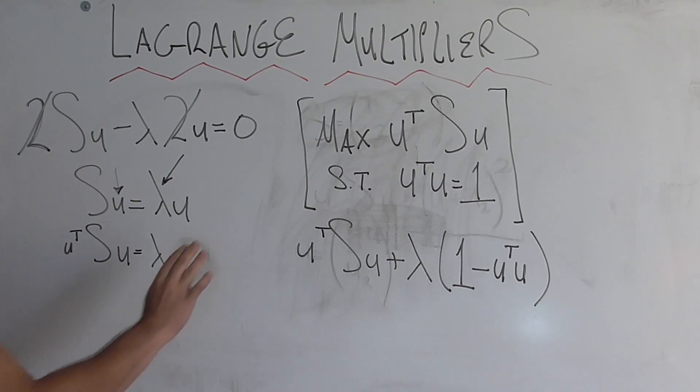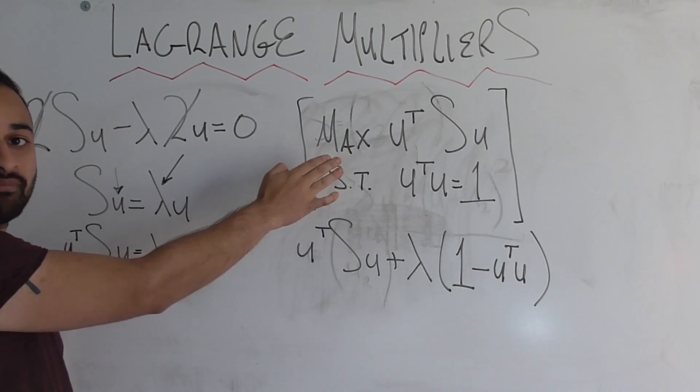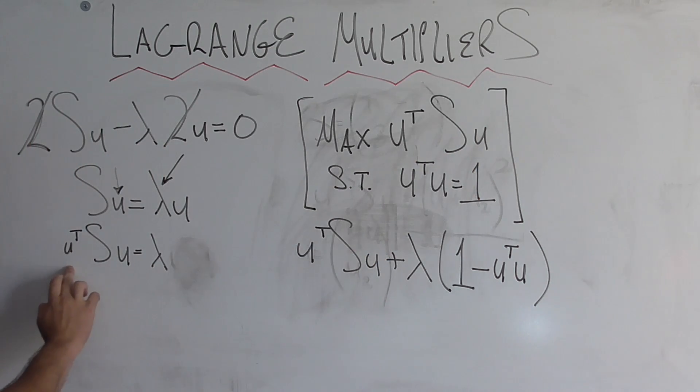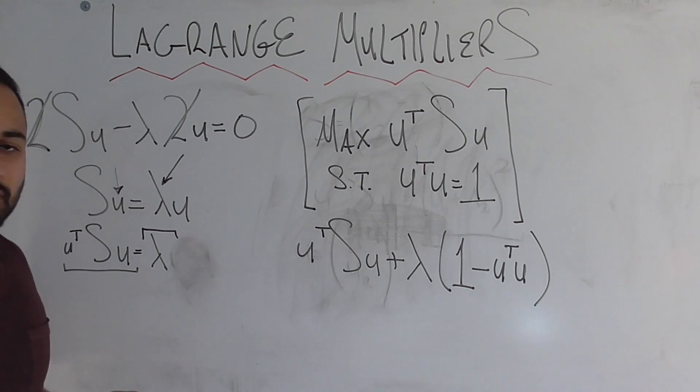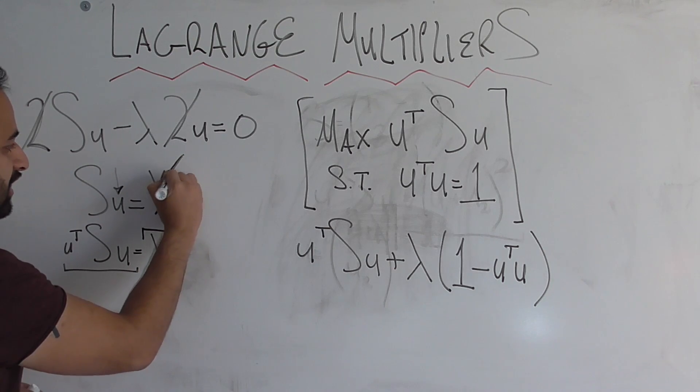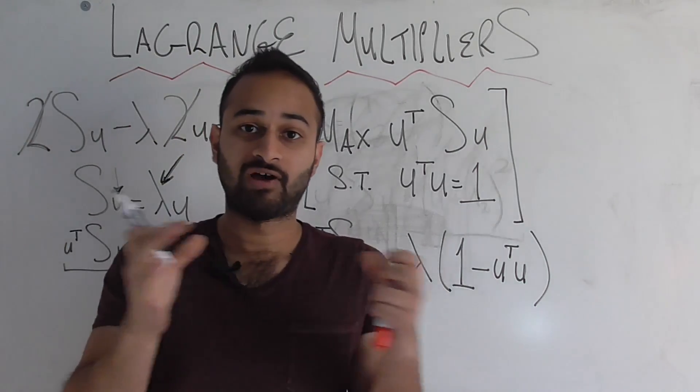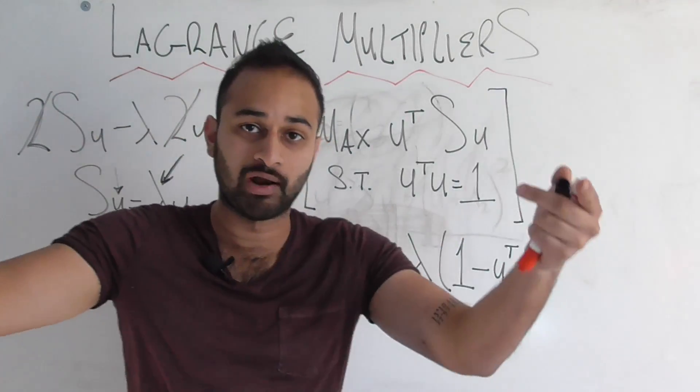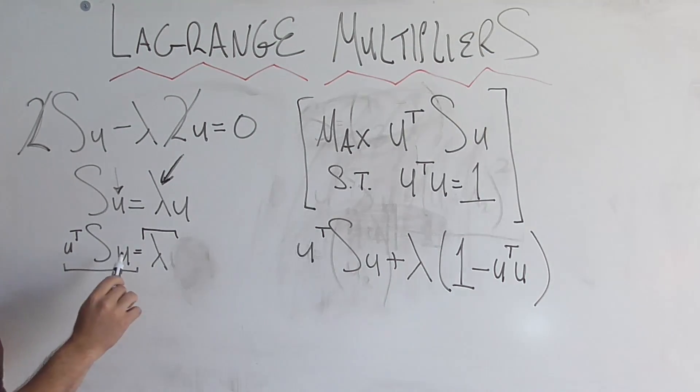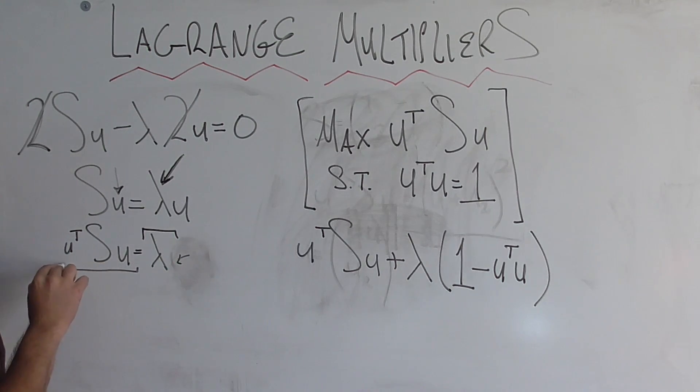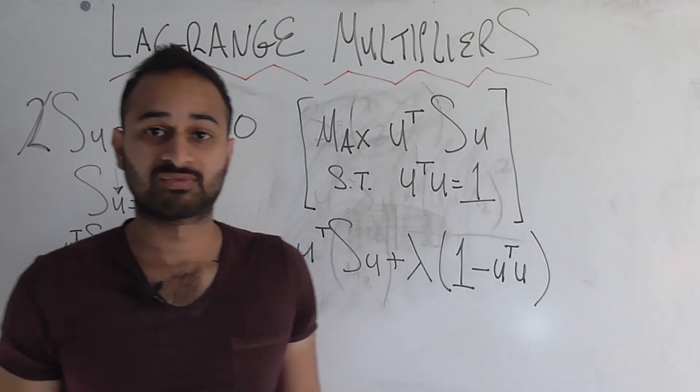So we find that U transpose SU is equal to lambda. Why is that significant? Because the thing we're trying to maximize in the beginning was U transpose SU. If we're trying to maximize this and this thing is equal to lambda, we're also trying to basically find the maximal lambda. But what is lambda? From our previous step, we saw that lambda is an eigenvalue of matrix S. So we basically just want to take all the eigenvalues of matrix S and find the biggest one. Because if we find the biggest eigenvalue, that's going to maximize lambda. That's going to maximize this. And that's exactly what we want in the first place.